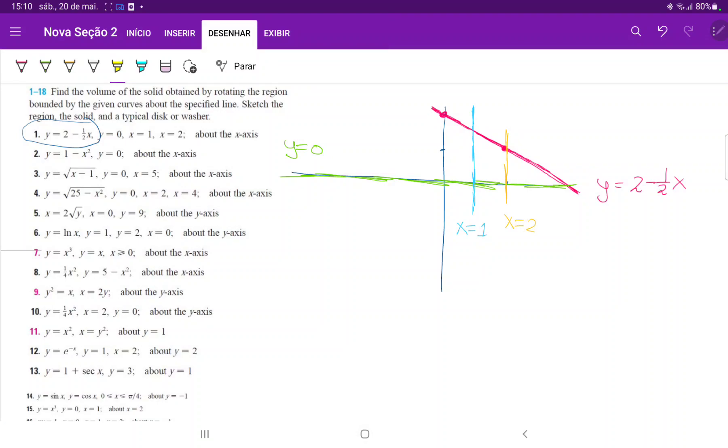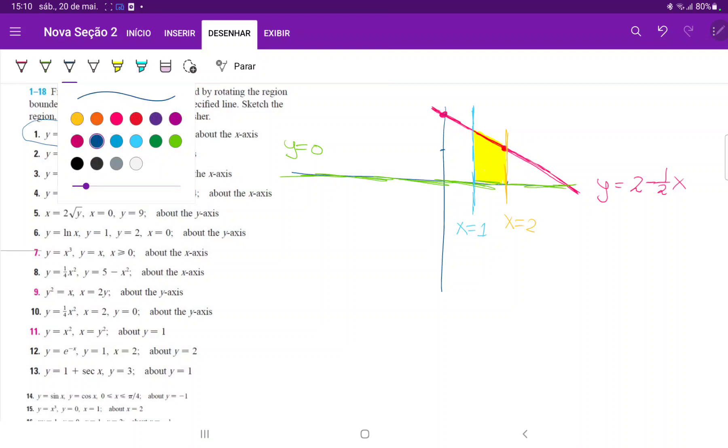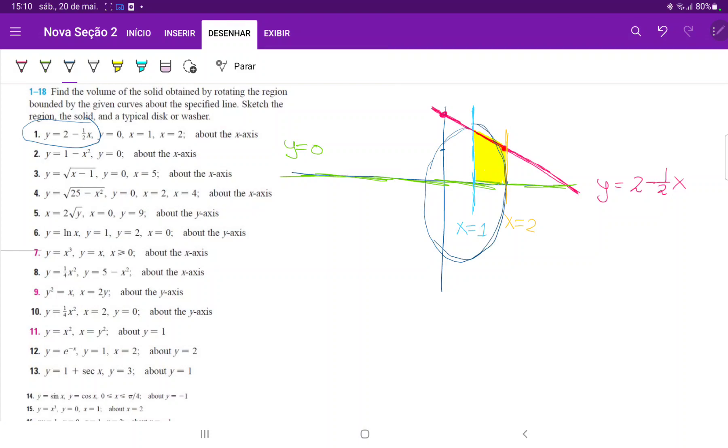So our area between these curves is this yellow area over here. And what we're going to do is we're going to revolve it around the x-axis using a disk. So the way that we do it is we're considering a disk that goes something like here.